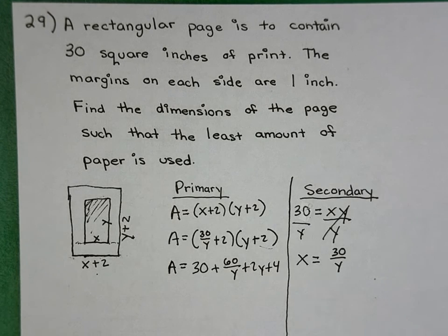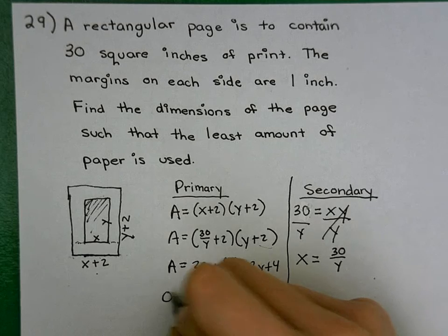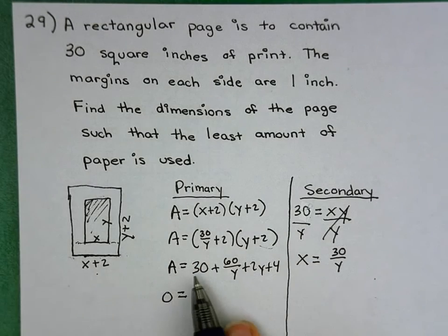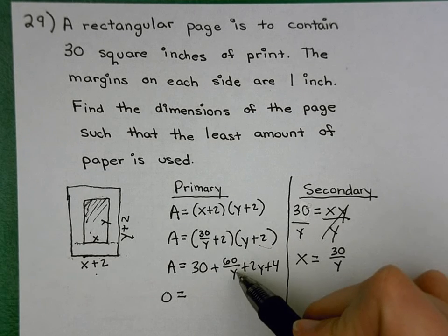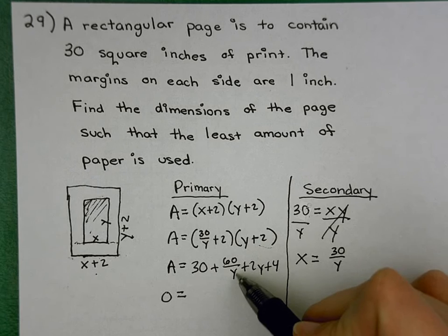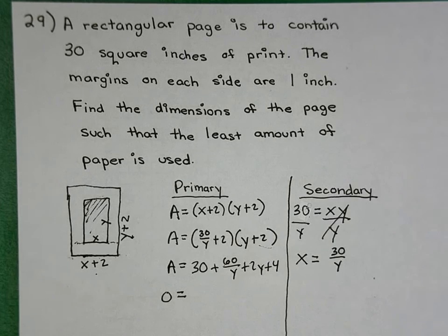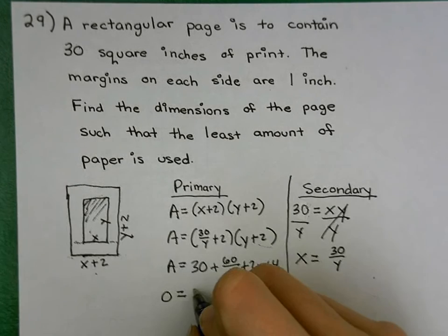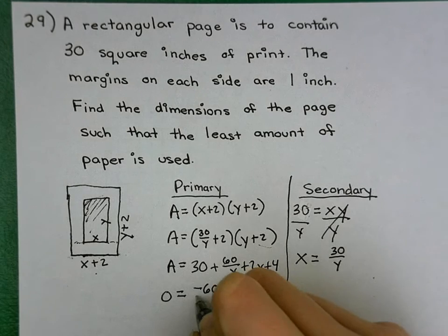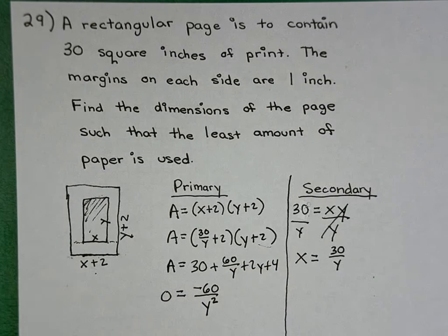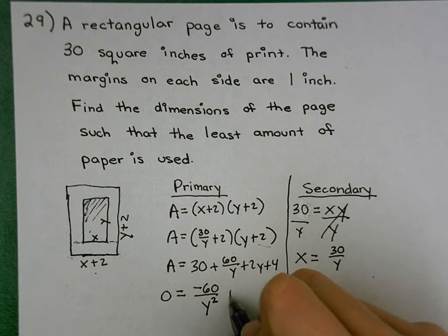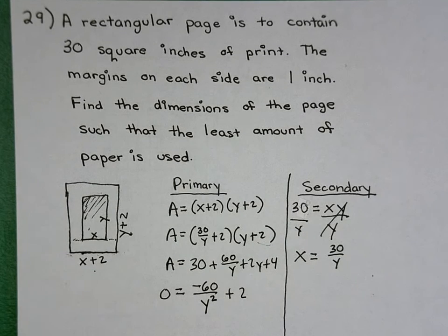Now that we're there, we can go ahead and take the derivative and set it equal to 0. Derivative of 30 is 0. Derivative of 60 over Y, you could do quotient rule, or you could do power rule if you rewrite this Y as Y to the negative 1 and brought it up out of the denominator. Either way, you should get negative 60 over Y squared. The derivative of 2Y is 2. Derivative of 4 is 0.